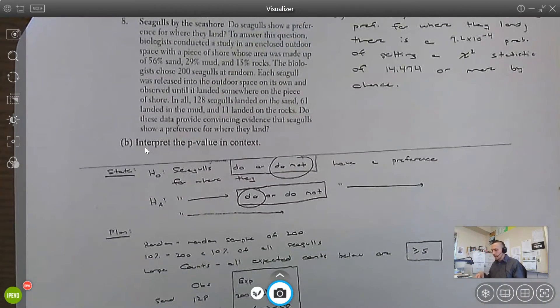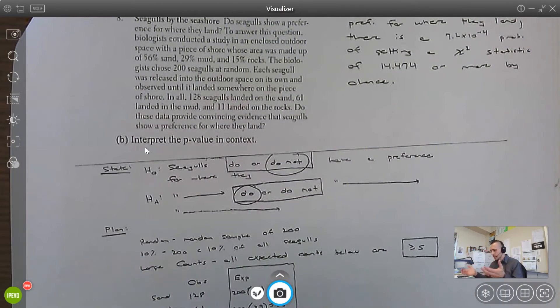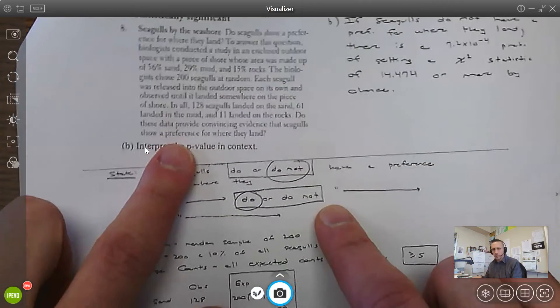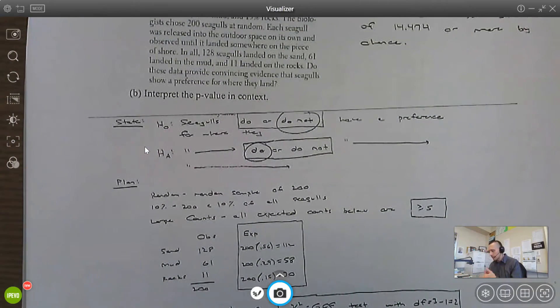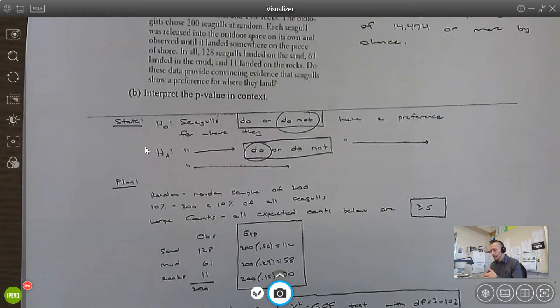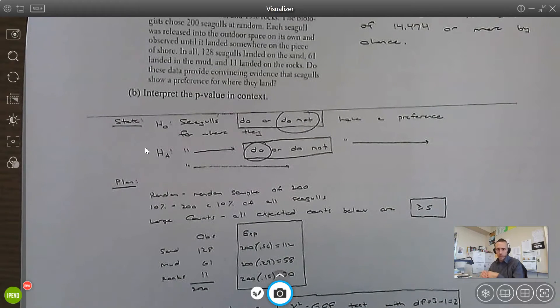So in question eight, we have these seagulls landing on different things. Is there evidence that they show a preference for where they land? For the state step, seagulls do not show a preference for where they land. The alternative would be that seagulls do show a preference for where they land. That's one way you could state it.